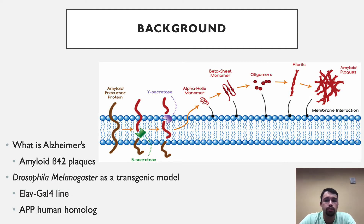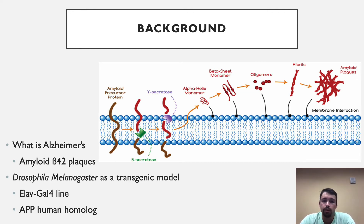To begin with, I'd like to cover a little bit of background about Alzheimer's disease and why we use Drosophila melanogaster as our experimental species. As some of you might know, Alzheimer's disease is a neurodegenerative disorder characterized by the loss of motor function and memory. This is believed to be caused by the accumulation of amyloid beta-42 plaques. As shown in the figure, these plaques stem from the amyloid precursor protein, also known as the APP protein. This protein is cleaved twice by both beta-secretase and gamma-secretase. This cleaving process eventually produces fibrils that collect to form extracellular plaques, known as the amyloid beta-42 plaques.